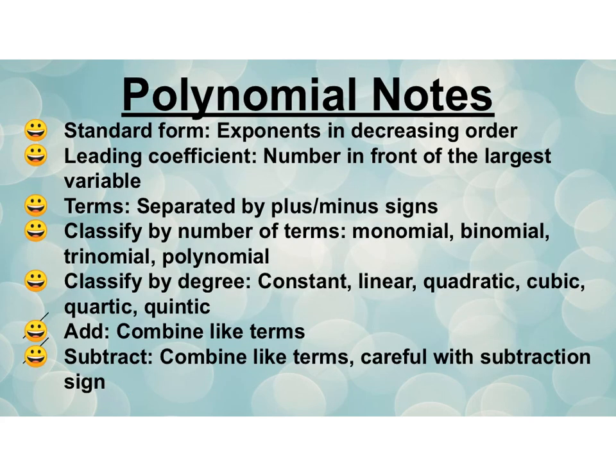These notes should get into your notebook. Standard form, exponents in decreasing order. Leading coefficient, it's the number in front of the largest variable. Terms are separated by the plus and minus signs. We're going to classify the number of terms: mono, binomial, trinomial, and then greater than 3 is polynomial. Classify by degree. X to the 0 is constant. X to the 1 is linear. X to the 2 is quadratic. X to the 3 is cubic. X to the 4 is quartic. X to the 5 is quintic. When you add, you combine like terms. And when you subtract, you also combine like terms. Just be careful with that subtraction sign. Good job.